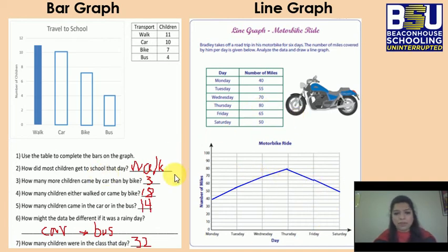Now, you can interpret the maximum number of miles they've covered was on Thursday. The minimum was on Monday. Let's get rid of all of this. And this is your home task.